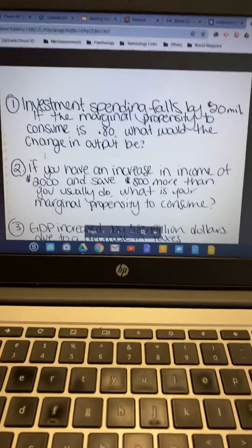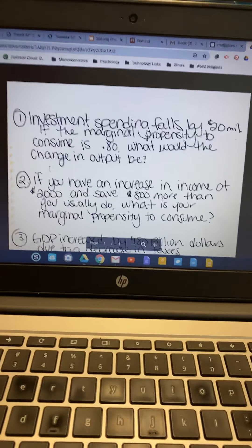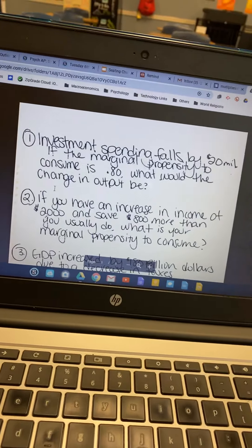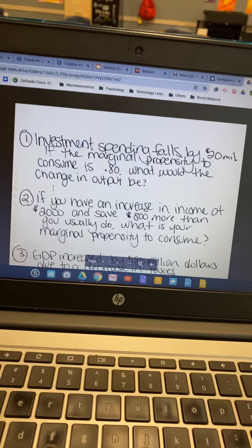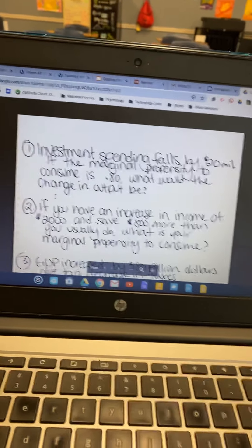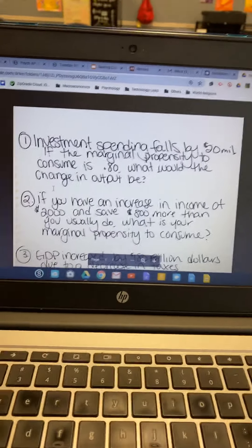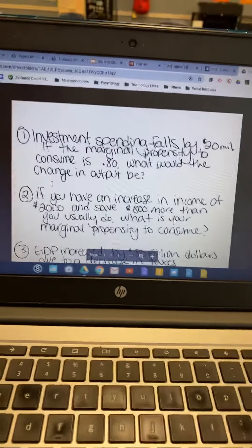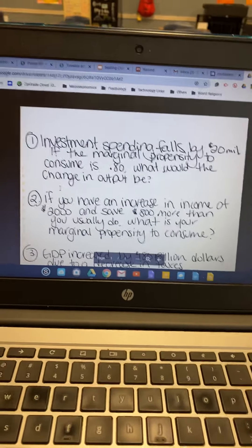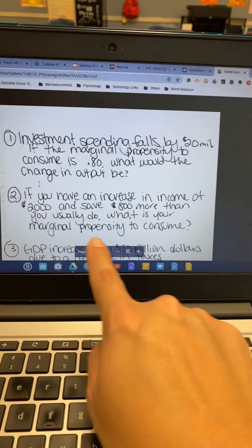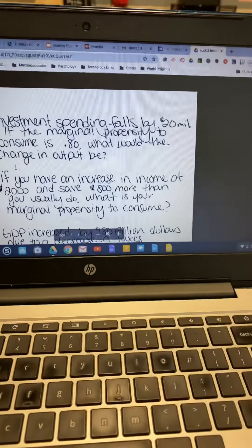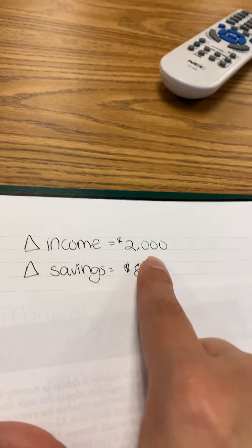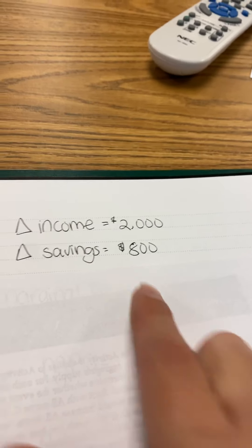The second question says, if you have an increase of income of $2,000, and because of that you save $800 more than you usually do, what is your MPC? So this isn't a big change. It's not talking about GDP or a change of C or I or G or XN. It's literally just asking what is the MPC. You know your income changed by $2,000, savings changed by $800.